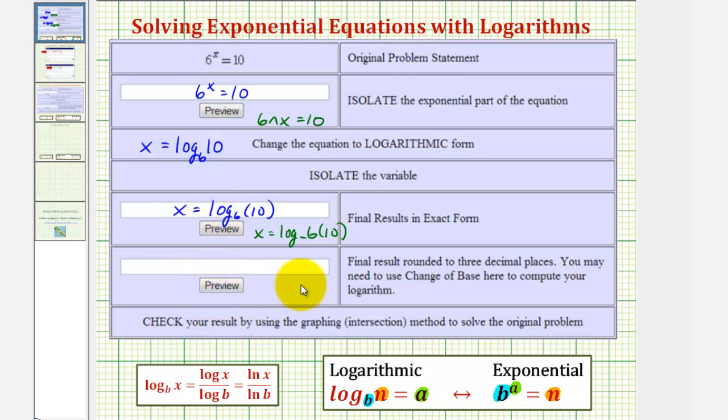Now for the last step, we want to get a decimal approximation for the solution to three decimal places. So we'll use the change of base formula on this equation here, which means we'll take the common log of the number and divide by the common log of the base. This works for any base, but we use either common log or natural log because these are the two bases on the calculator.